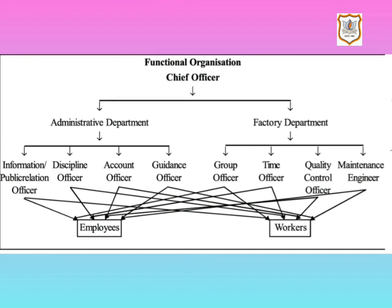Each officer can give orders to the employees under him to perform the task. In the administrative department, four works are to be performed: information or public relations officer, discipline officer, accounts officer, and guidance officer. Under the factory department, we have group officers, time officers, quality control officers, and maintenance engineer. So here we are done with the chart of functional organization.